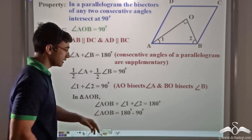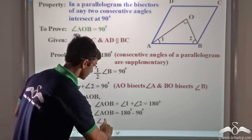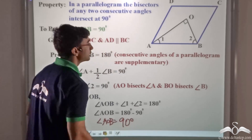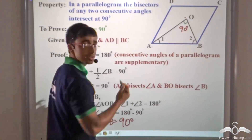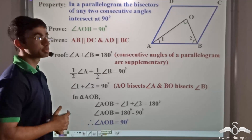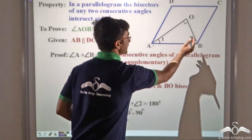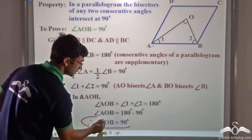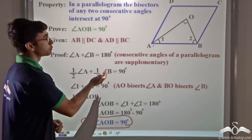Since angle 1 plus angle 2 equals 90 degrees, angle AOB will be 180 degrees minus 90 degrees, which gives angle AOB equal to 90 degrees. So we have proved what we originally set out to show — the angular bisectors of angle A and angle B intersect each other at right angles, and angle AOB is equal to 90 degrees.